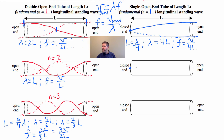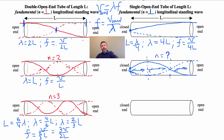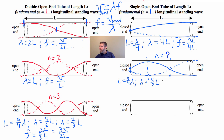Let's do the next harmonic that resonates inside a closed-end tube. We need a node at the closed end and an anti-node at the open end, and we add another anti-node in the middle. Counting quarter wavelengths from node to anti-node: that gives us three quarter wavelengths, so L equals three-quarters λ, meaning λ equals 4L/3. The frequency is V over (4L/3), which equals 3V over 4L.